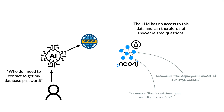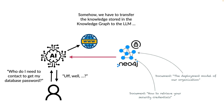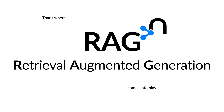So if the user asks 'who do I need to contact to get my database password?' the LLM would reply with nothing meaningful. Somehow we have to transfer the knowledge stored in the knowledge graph to the LLM to enable it to answer questions — and that's where RAG, Retrieval Augmented Generation, comes into play.